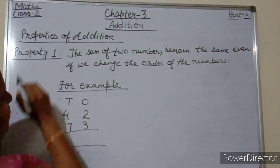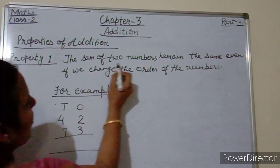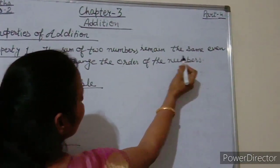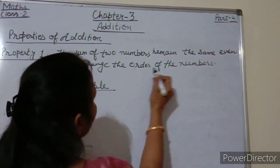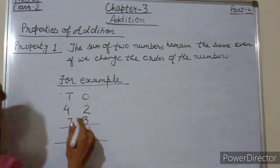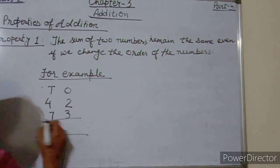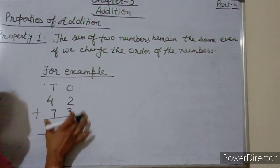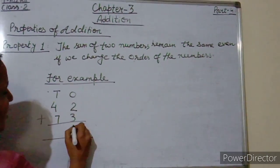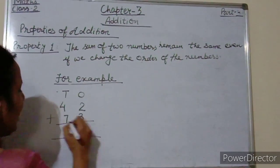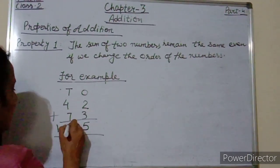Property number 1: the sum of 2 numbers remains the same even if we change the order of the numbers. I have given you one example. So what you have to do here is add these numbers. So 2 plus 3 is 5, and 4 plus 7 is 11.